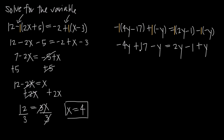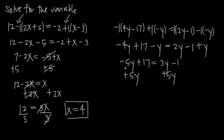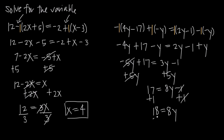Combining like terms on the left, negative 4y and negative y gives us negative 5y plus 17, equals 2y plus y which is 3y minus 1. We add 5y to both sides to cancel the negative 5y on the left, leaving us with 17 equals 8y minus 1. Then we add 1 to both sides — negative 1 and positive 1 cancel — leaving us with 18 equals 8y. Dividing both sides by 8 leaves y equal to 18 over 8, which simplifies to 9 over 4 when we divide numerator and denominator by 2.